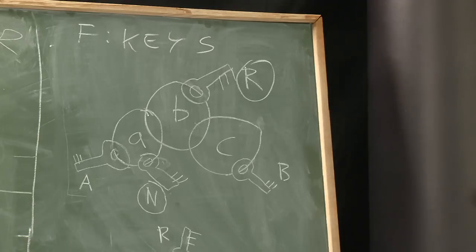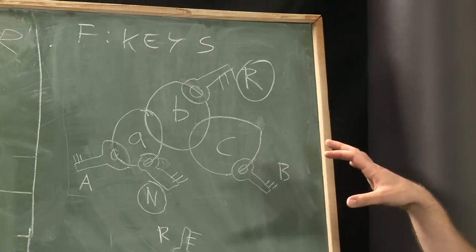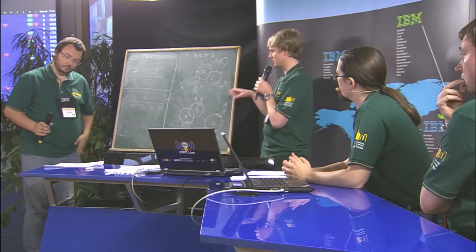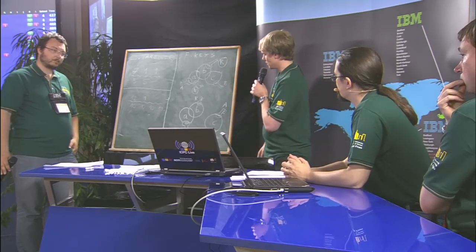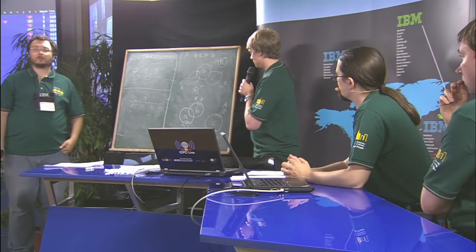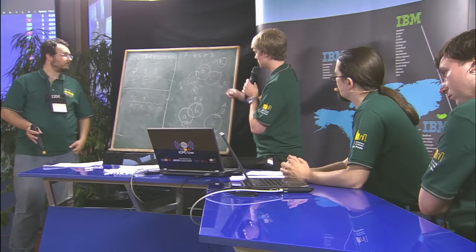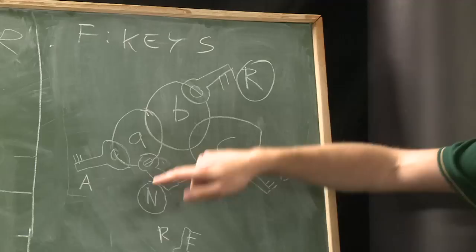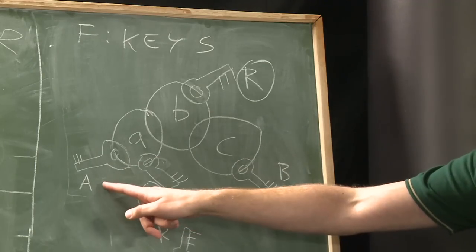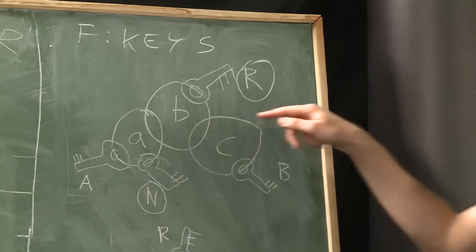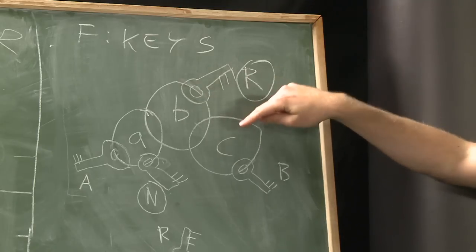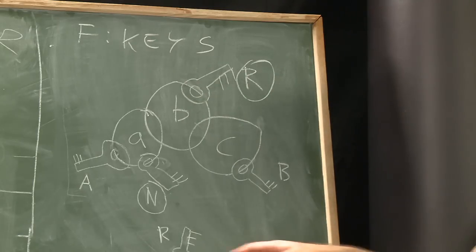So we want to minimize the number of key operations. And if there are solutions with the same number of key operations, we want to minimize the ring operations. So we could end up with a solution like this, where we have to do two key operations. We remove key A from here and attach it to ring C. And then we just attach ring B and ring C. So we have this state. And this would be a solution in this case.